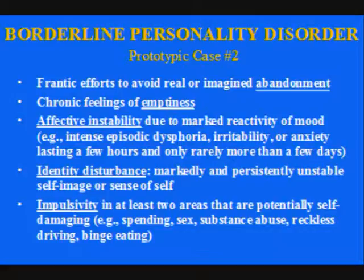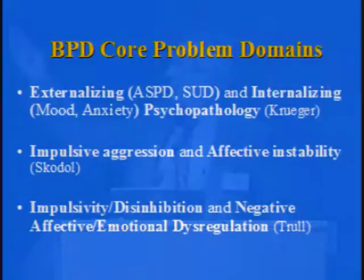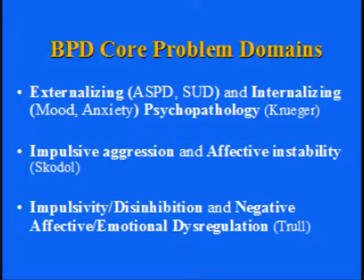Another way to understand subtyping is to identify what is truly core to this highly heterogeneous disorder — there are 151 ways to meet the criteria. Different investigators use different labels to describe the same thing: Robert Krueger refers to a core of externalizing psychopathology (antisocial personality, substance use) and internalizing psychopathology (mood and anxiety disorders). Tom Skodol describes this as an impulsive-aggressive versus affective instability core, and Tim Trull labels it in terms of normal-range personality traits — but these two core dimensions, whether called externalizing/internalizing or disinhibition/negative affect dysregulation, define borderline personality disorder.